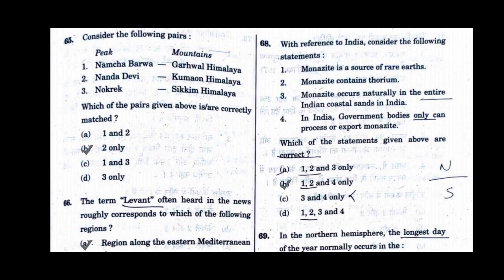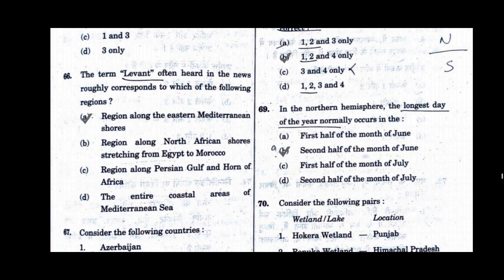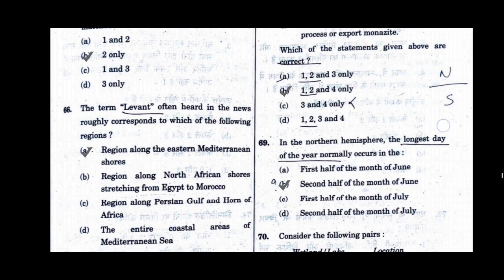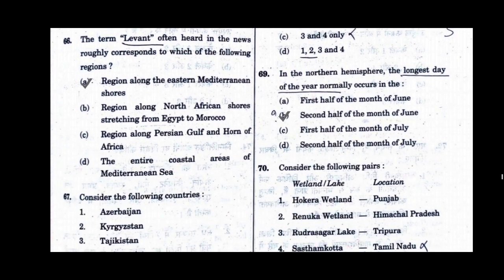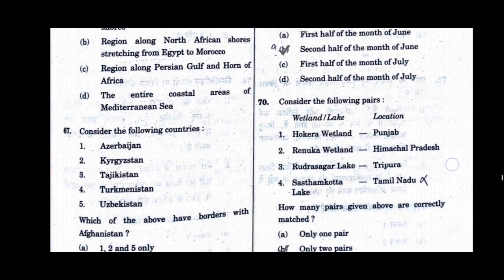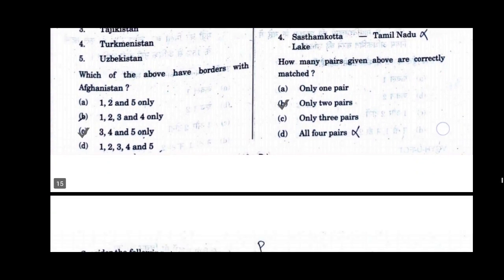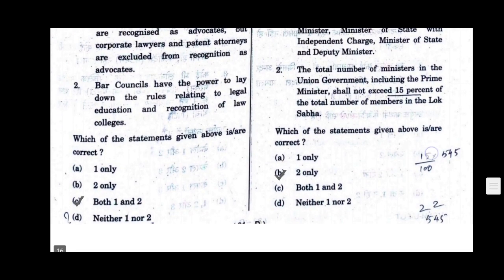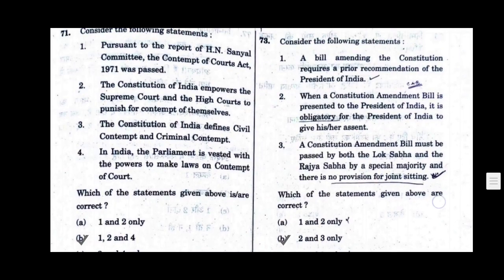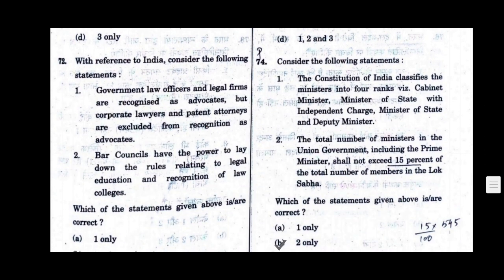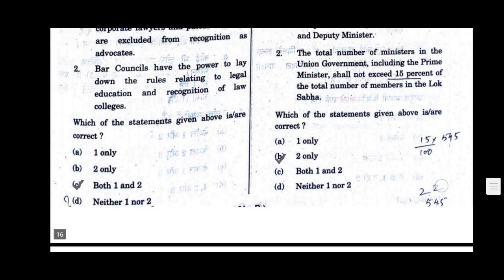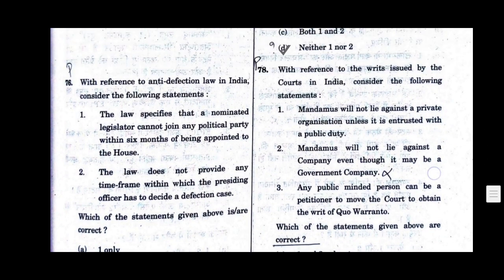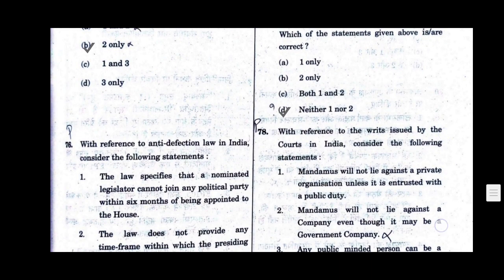Question number 65, option B will be the correct answer. Question number 66, option A will be the correct answer. Question number 67, option C will be the correct answer. Question number 68, option B will be the correct answer. Question number 69, option B will be the correct answer. Question number 70, option B will be the correct answer. Question number 71, option B will be the correct answer. Question number 72, option C will be the correct answer. Question number 73, option B will be the correct answer. Question number 74, option B will be the correct answer. Question number 75, option B will be the correct answer. Question number 76, option B will be the correct answer. Question number 77, option D will be the correct answer.